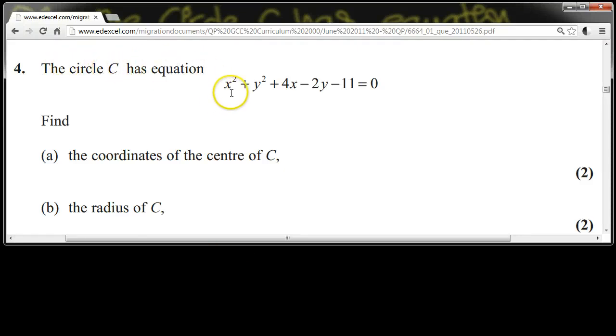The circle C has equation x squared plus y squared plus 4x minus 2y minus 11 equals 0. Find the coordinates of the center of C, the radius of C.